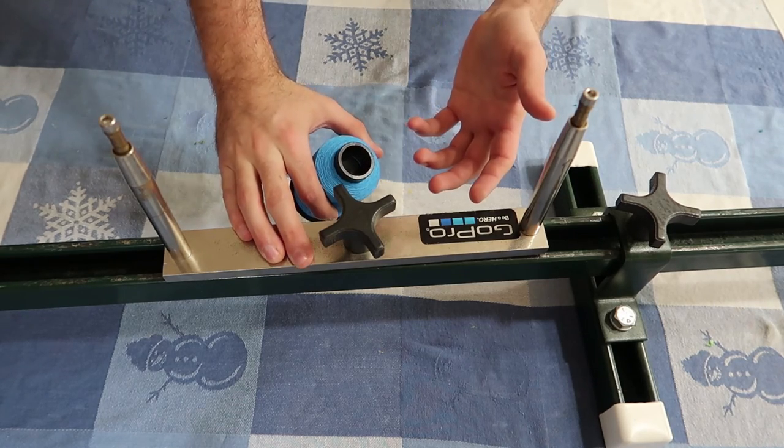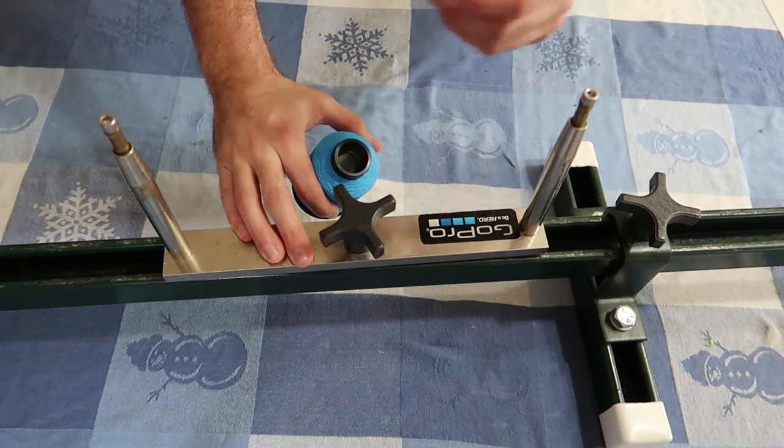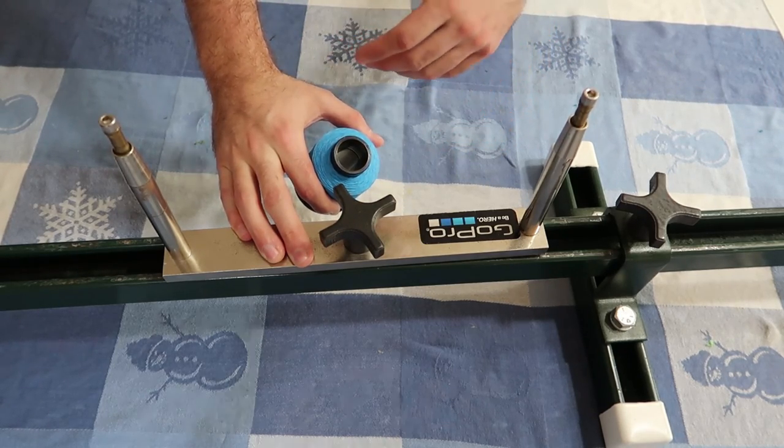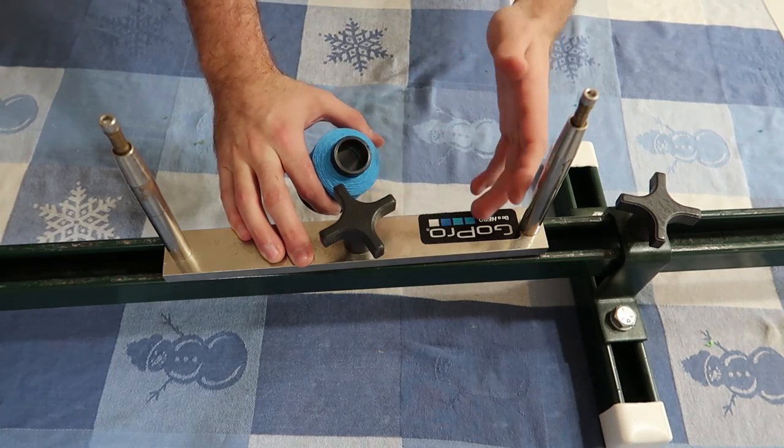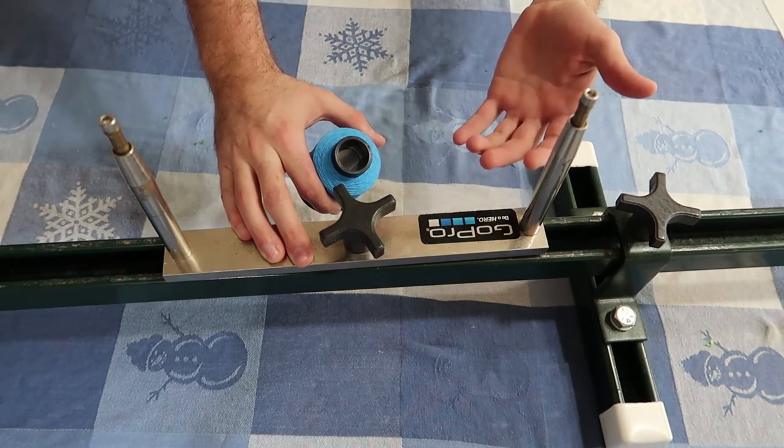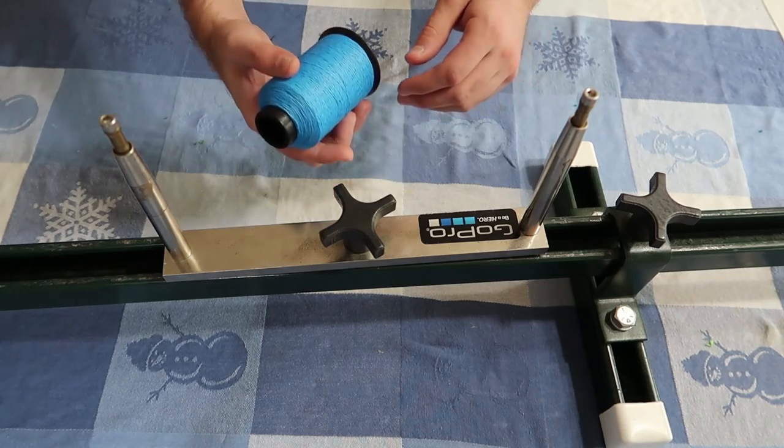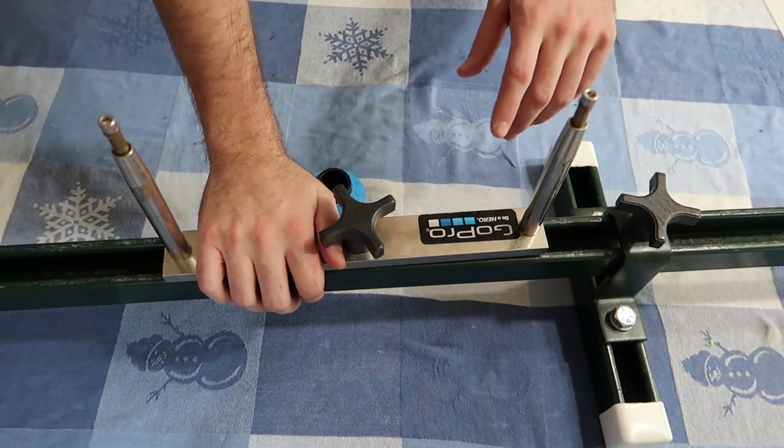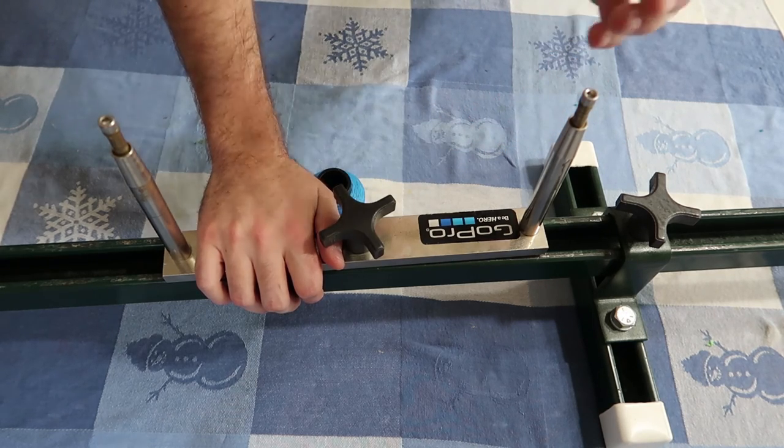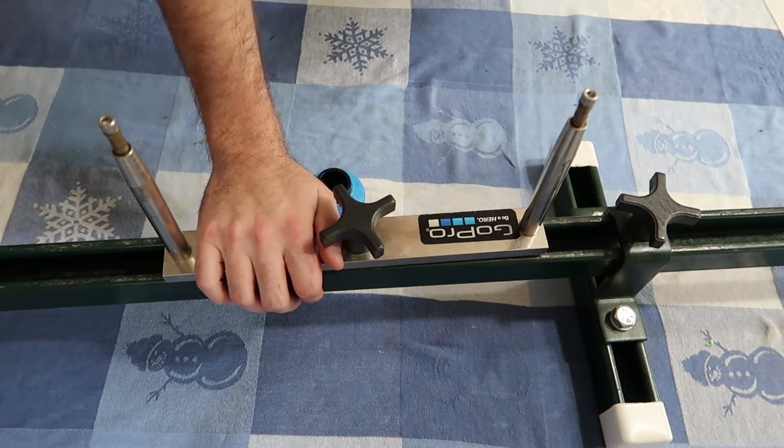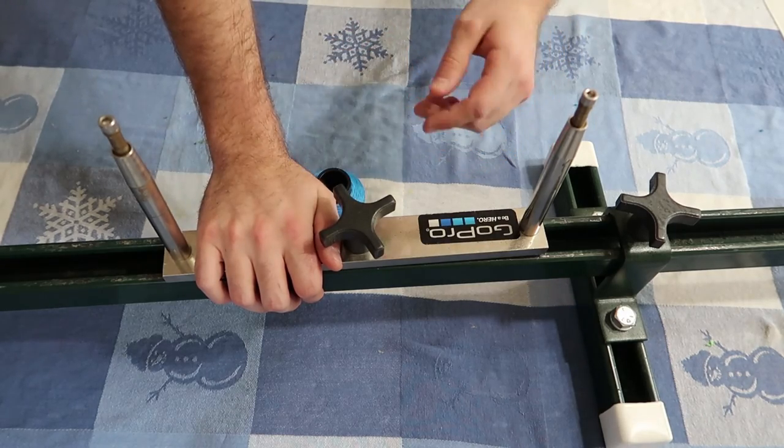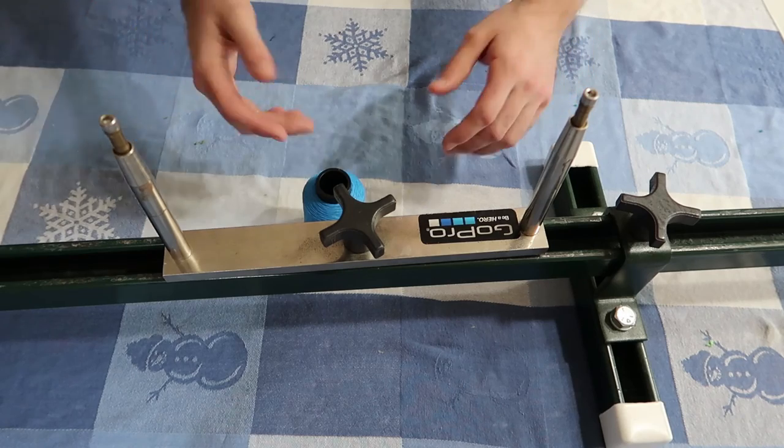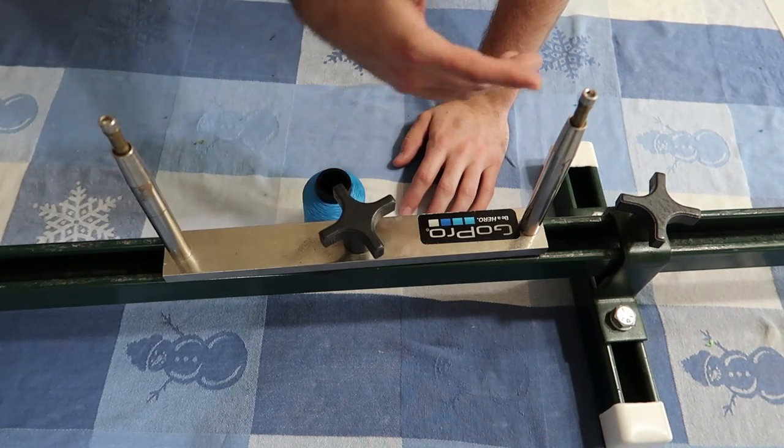Now, where you start, either left or right, doesn't really matter. It's just a matter of being consistent. Personally, if you're at your home string jig, which you should be, most of the time you wouldn't be making these somewhere else unless it's at a friend's house or something. But always start on the same side the same way. Again, archery, consistency. String making, you want consistency. So always do the same thing.